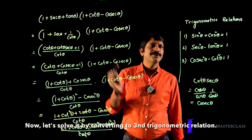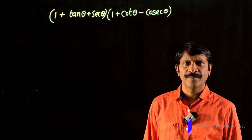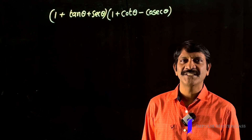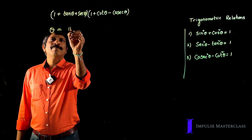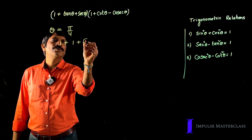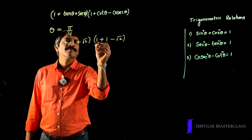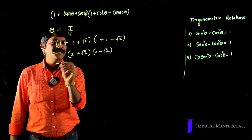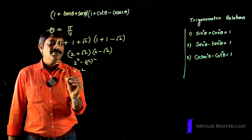Similarly, we can solve this using the third relation as well. If this question appears in a board examination, use the method just explained. But if it comes in an objective examination, there is a trick to solve it within seconds: substitute θ = 45°. Then 1 + tan 45° + sec 45° = 1 + 1 + √2 = 2 + √2, and 1 + cot 45° − cosec 45° = 1 + 1 − √2 = 2 − √2. This gives (2 + √2)(2 − √2) = 4 − 2 = 2. We get the same answer, which is 2.